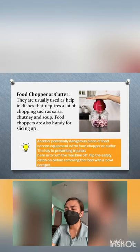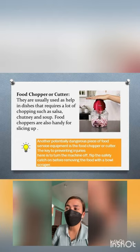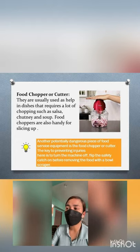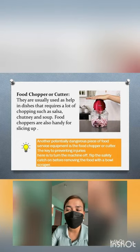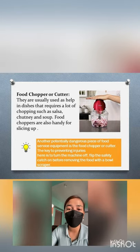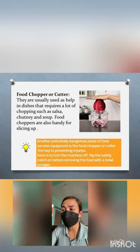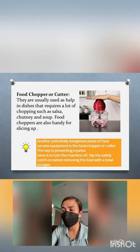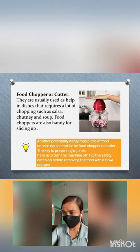Next, we have the food chopper or cutter. They are usually used for dishes that require a lot of chopping, such as salsa, chutney, and soup. Another potentially dangerous piece of food service equipment, the key to preventing injuries is to turn the machine off and flip the safety catch on before removing food with a bowl scraper.